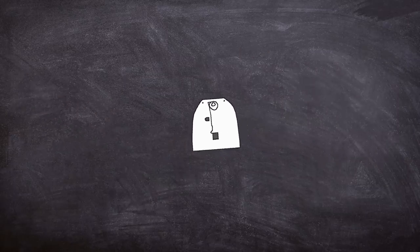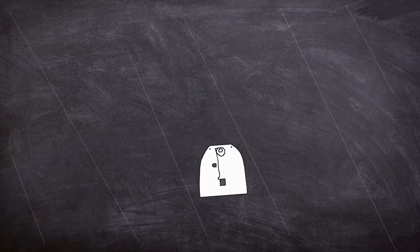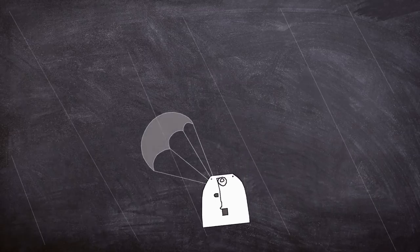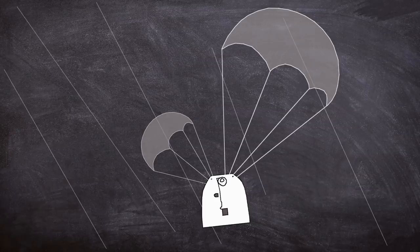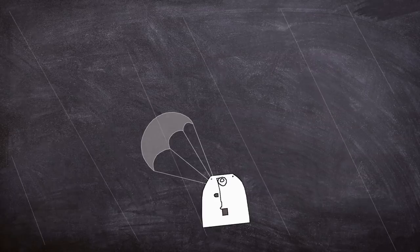For a safe landing, Soyuz needed to deploy a drogue parachute and a main parachute. The first successfully deployed, however due to a failed pressure sensor, the main chute did not.